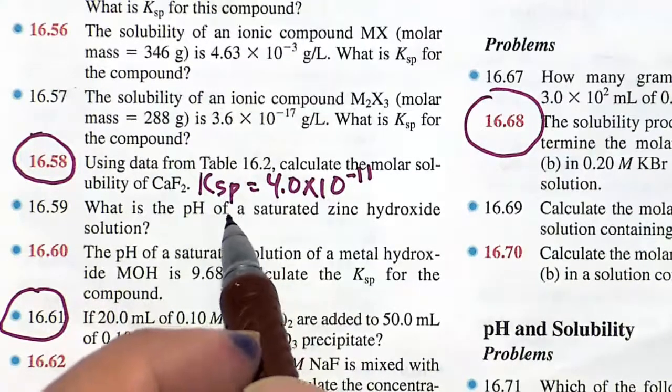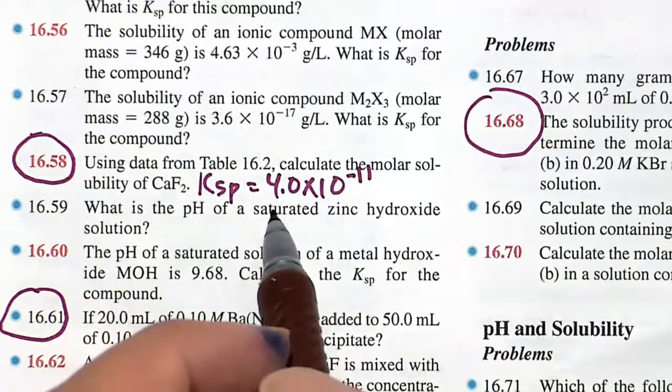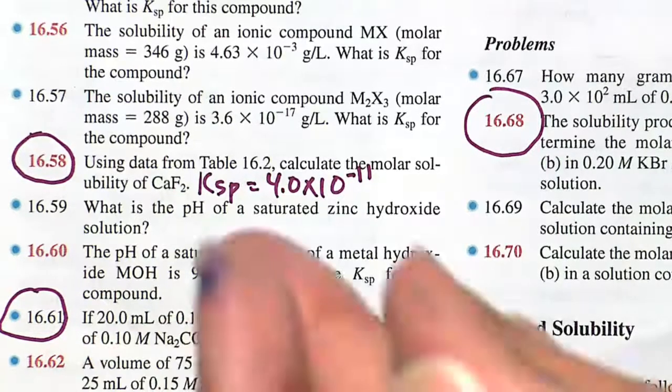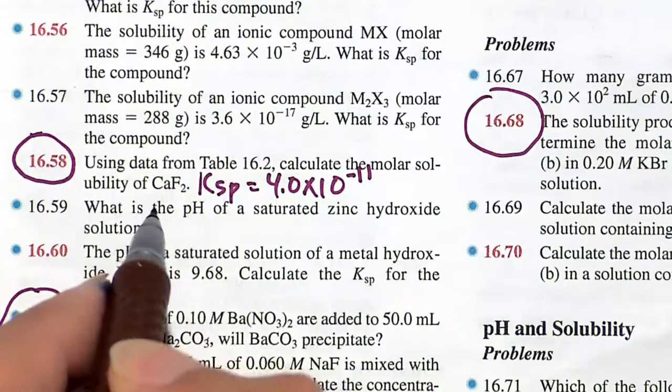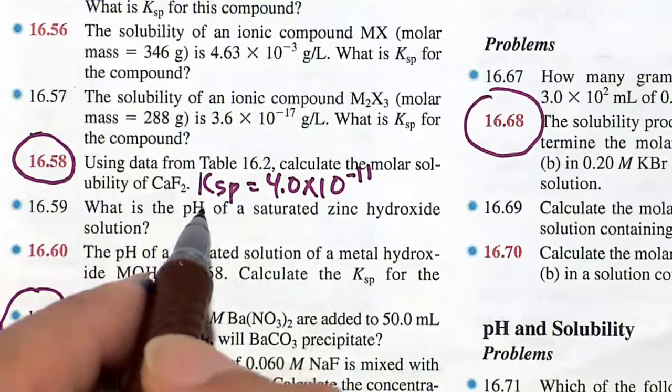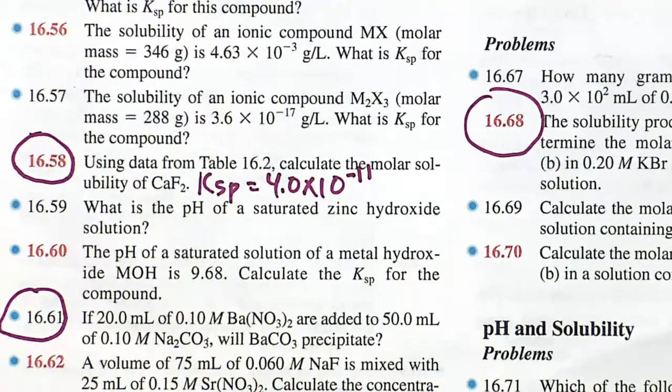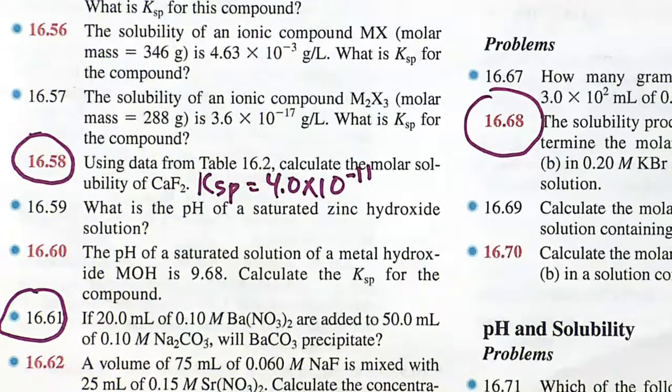So this is a Ksp problem. Table 16.2 tells us the Ksp for calcium fluoride is 4.0 times 10 to the minus 11. A very small number, but enough such that some of the reaction will go to the right-hand side of this chemical equation yielding calcium ion and fluoride ion.